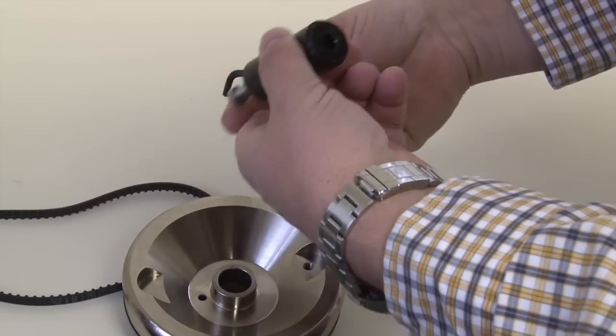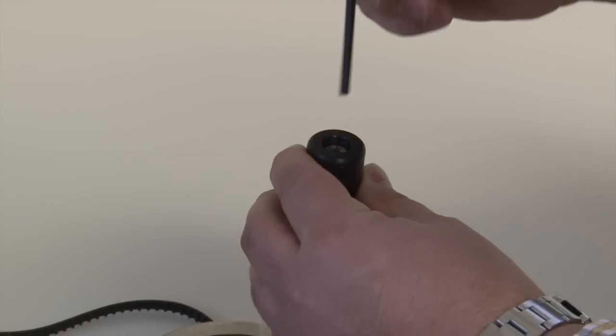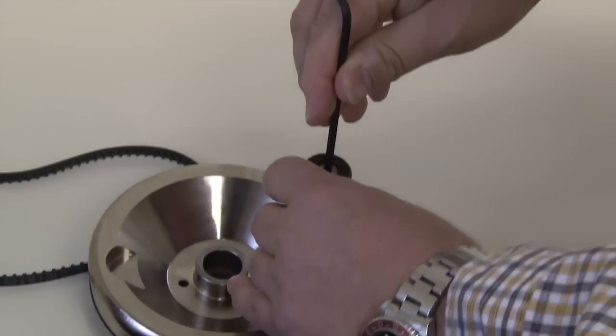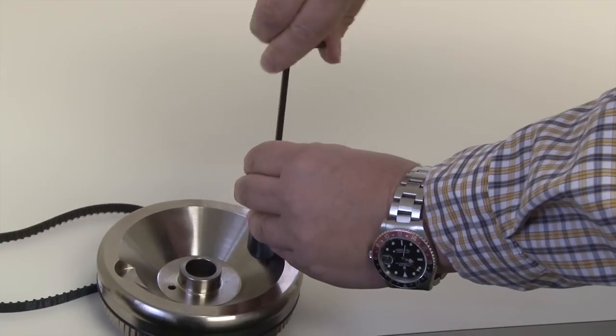One side has a recessed cavity, so it won't go in this way, obviously. Needs to go in from this direction. And then drops down in, and just snug this shoulder bolt.